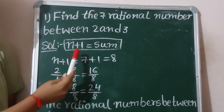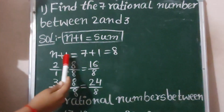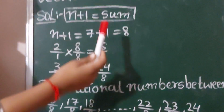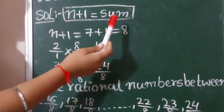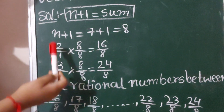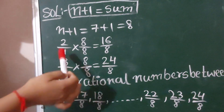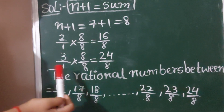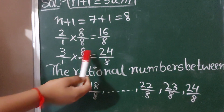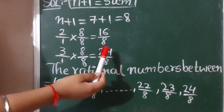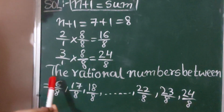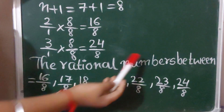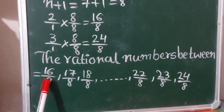N plus 1 equals to 8 (that is, 7 plus 1 equals 8). 2 by 1 into 8 by 8 equals to 16 by 8. 3 by 1 into 8 by 8 equals to 24 by 8. The rational numbers between 2 and 3 are: